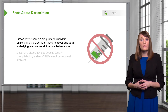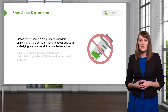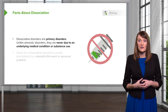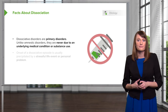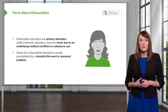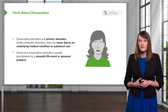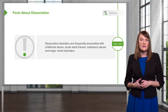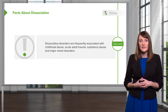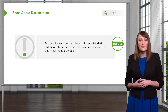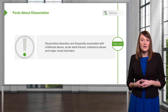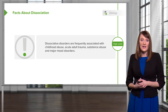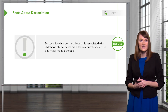Dissociative disorders are primary disorders. Unlike amnestic disorders, they are never due to an underlying general medical condition or substance abuse, so you must rule those out before diagnosing someone with a dissociative disorder. The onset of a dissociative episode is usually precipitated by a very stressful life event or significant personal problem. Dissociative disorders are frequently associated with a history of childhood abuse, adult trauma, substance abuse, and major mood disorders. Keep in mind that sense of self and what it means to dissociate as we move forward.